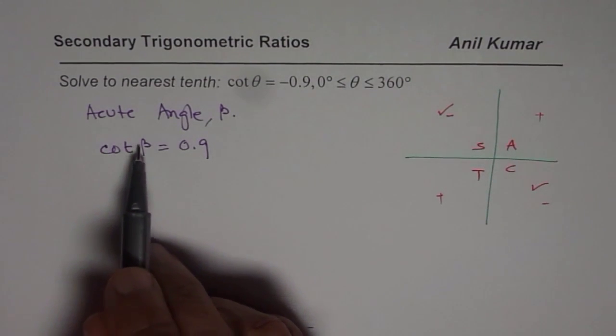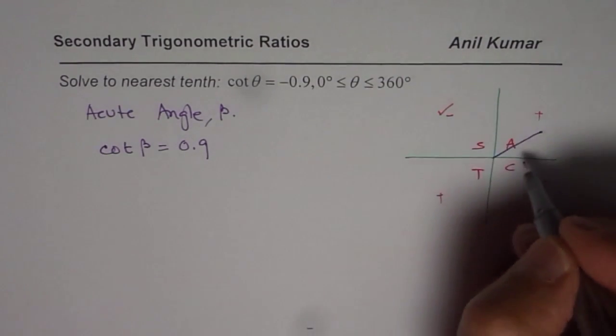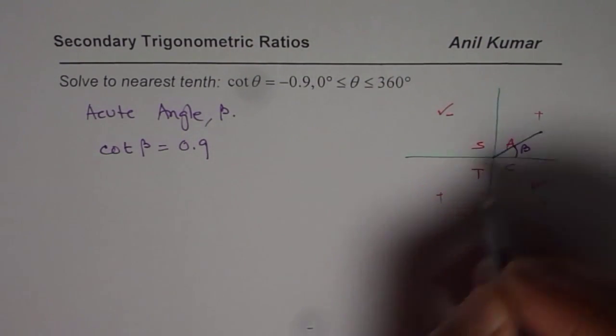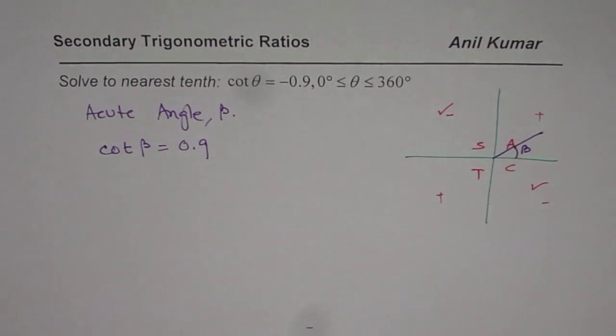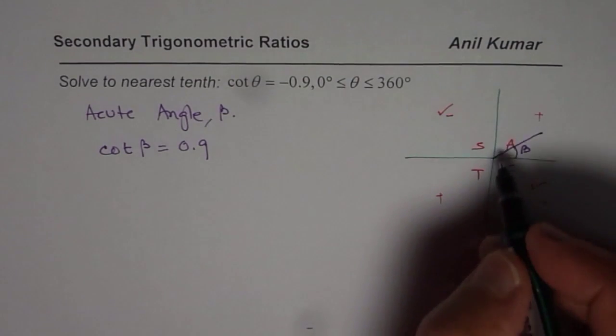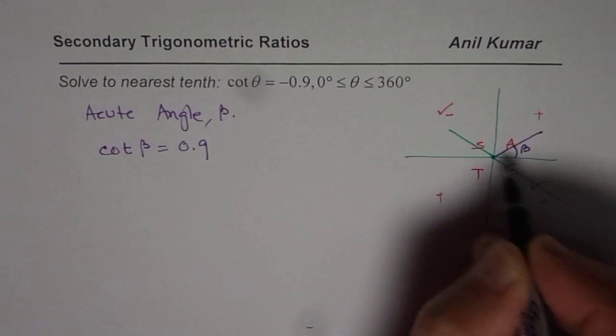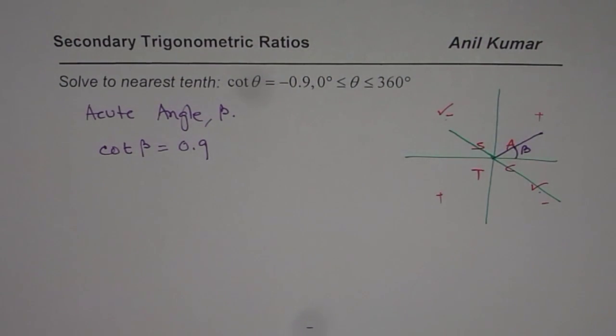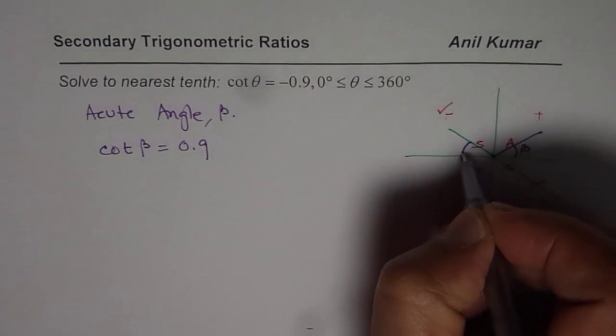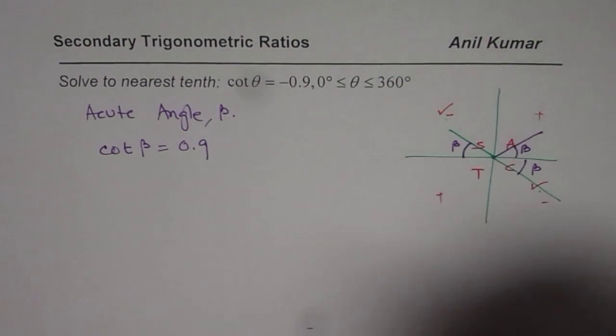Now we know cot β. We are looking for some angle which, let us say here. And this angle is β for us. This is not the solution. We are looking for a negative value. That means the solution will actually be either in quadrant 2 or in 4. Only then we get a negative value. But important thing here is that the acute angle will be same, will be β. Do you see that? And that helps us to find the answer.